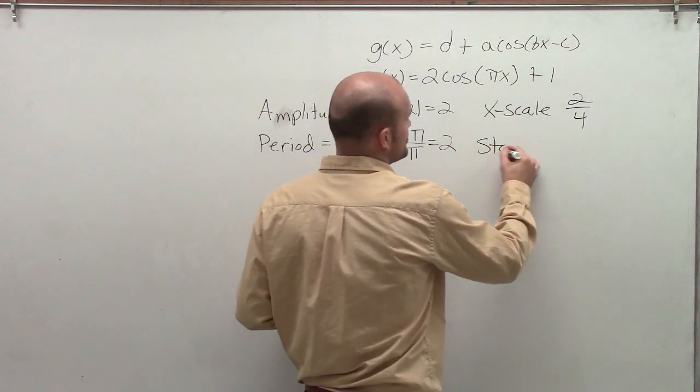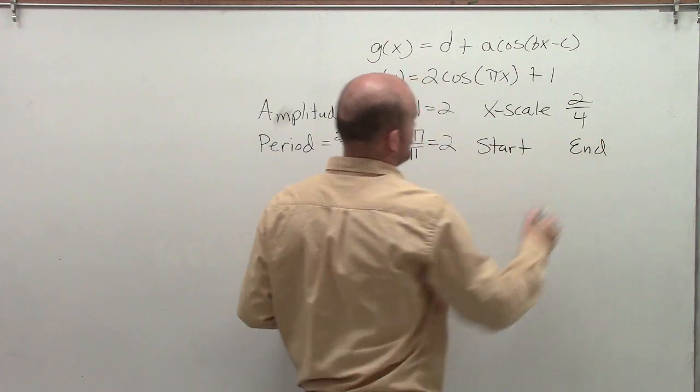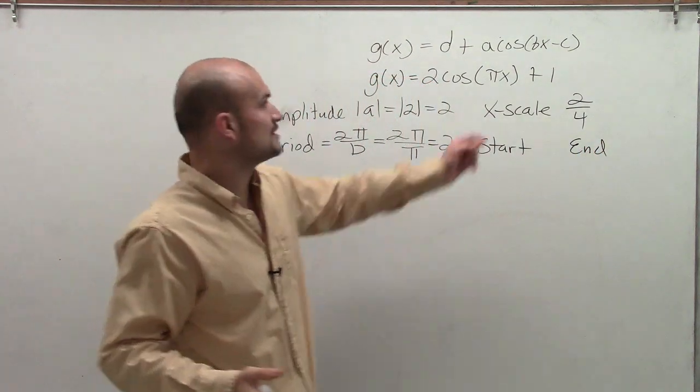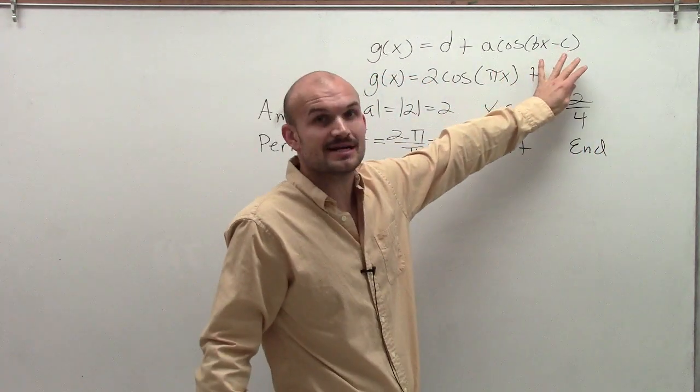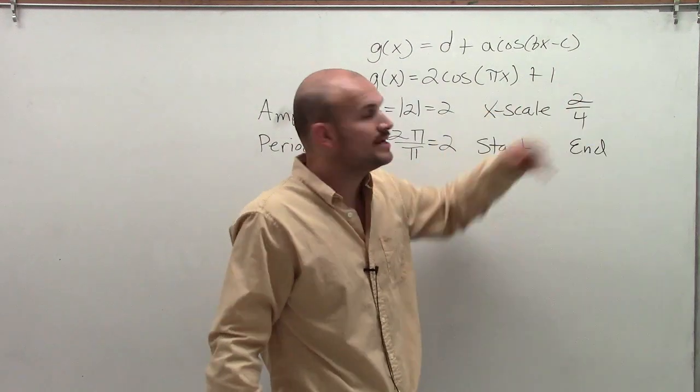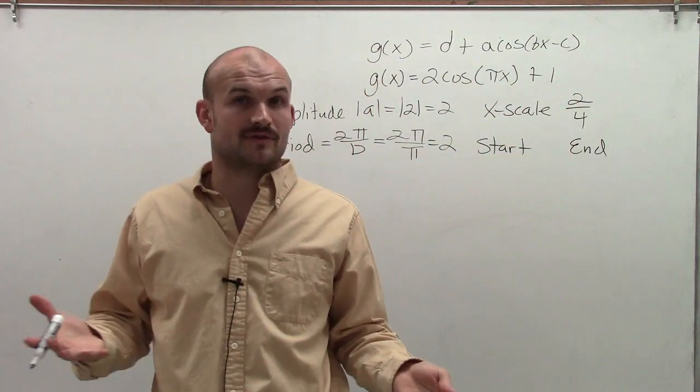And then the last thing we want to do is determine the start and the end of our graph. So the start and the end, the formal definition, was to take your transformations inside your function and set them equal to 0. And then that's for the start. And then to set them equal to 2 pi for the end.